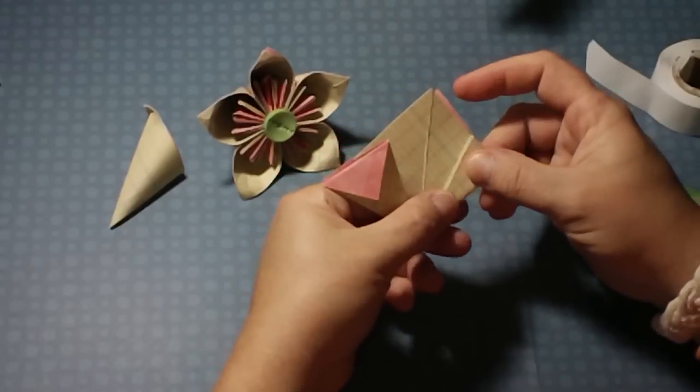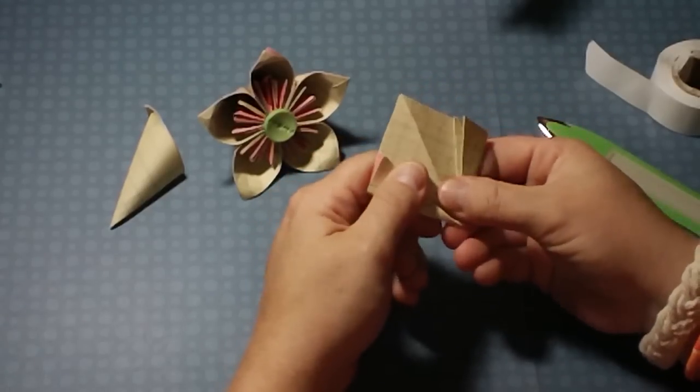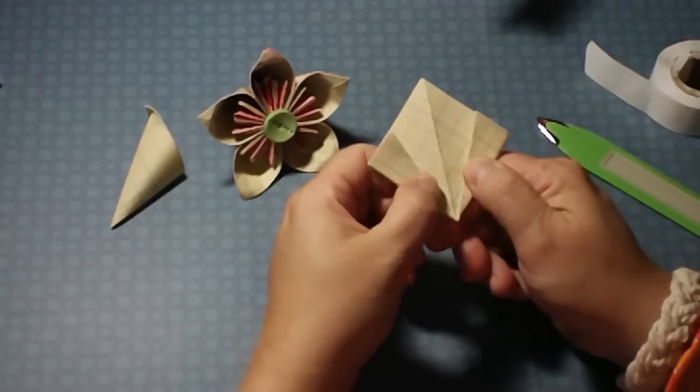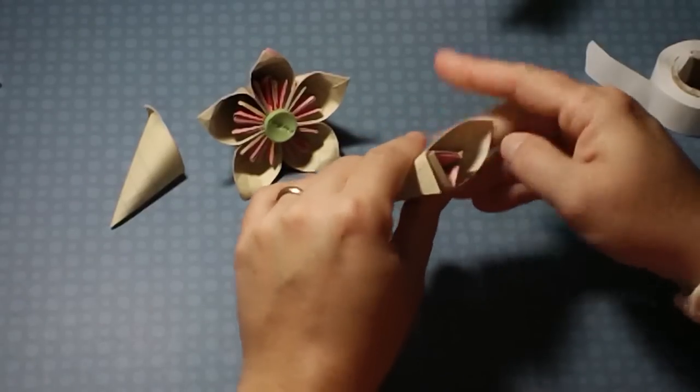Now we're going to take this side and fold it in, and take this side and fold it in. Now we have this here. You can't see any of the pink anymore, and we just bring our points together.